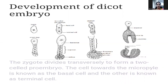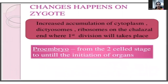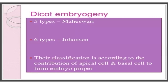The zygote divides transversely to form a two-celled pro-embryo — basal cell and terminal cell. The cell towards the micropyle of the embryo sac is the suspensor cell, i.e., the basal cell, and the other makes up the embryo cell — the terminal cell. Hanstein, in 1870, worked out the details of embryo development in Capsella bursa-pastoris, a member of the Cruciferae family, later confirmed by other workers.